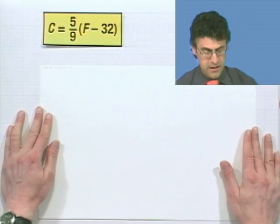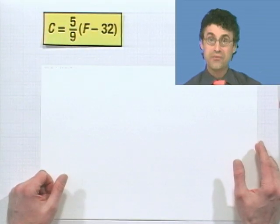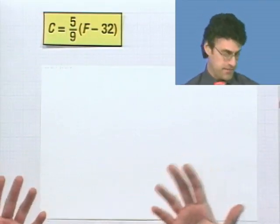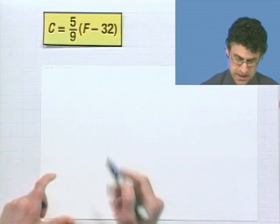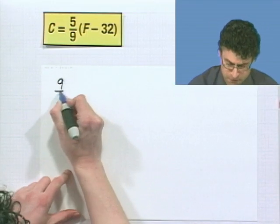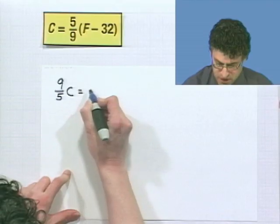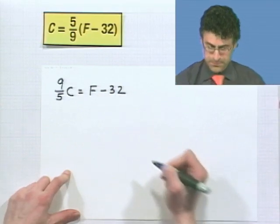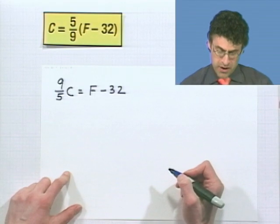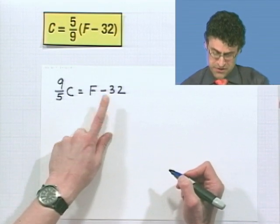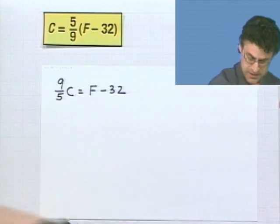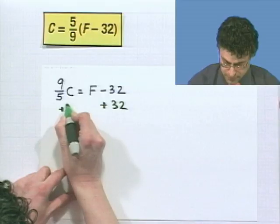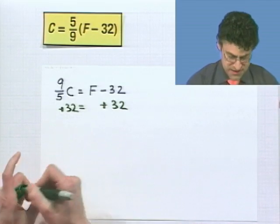The first thing I want to do is undo the multiplication by 5 ninths, which means I'd multiply both sides by 9 fifths. So if I multiply both sides by 9 fifths, what do I see? I see 9 fifths C equals F minus 32.